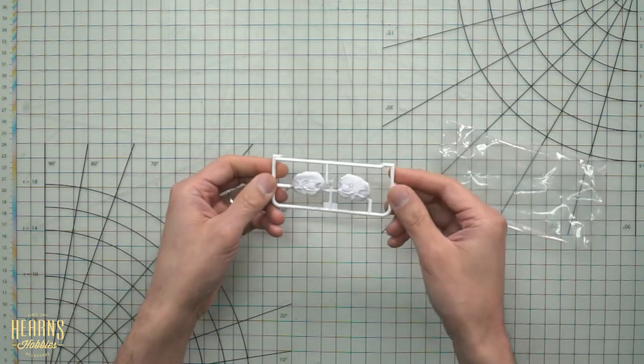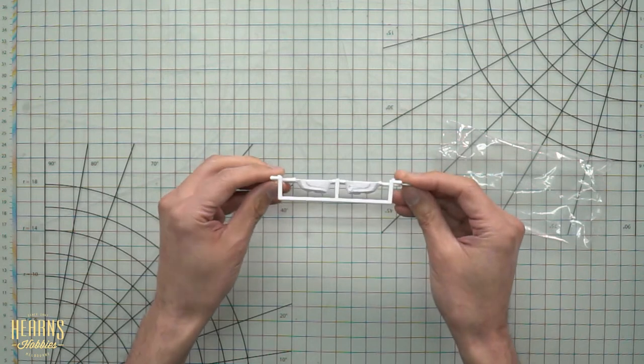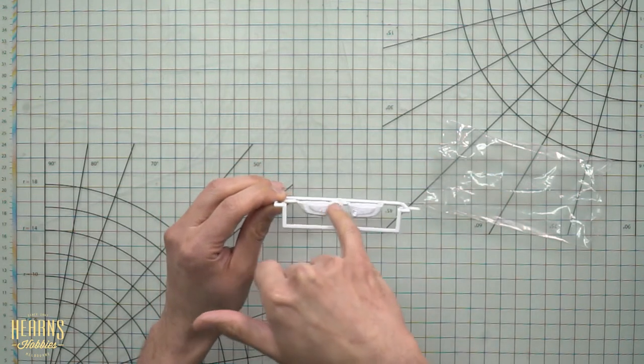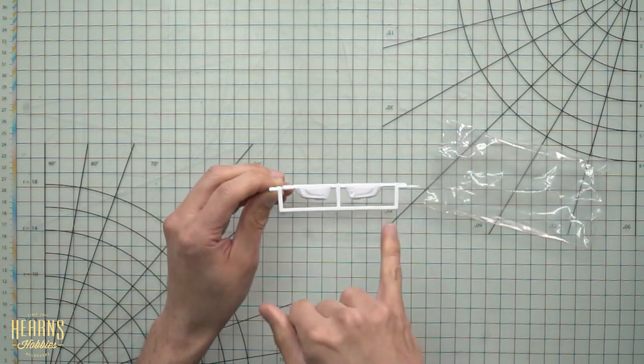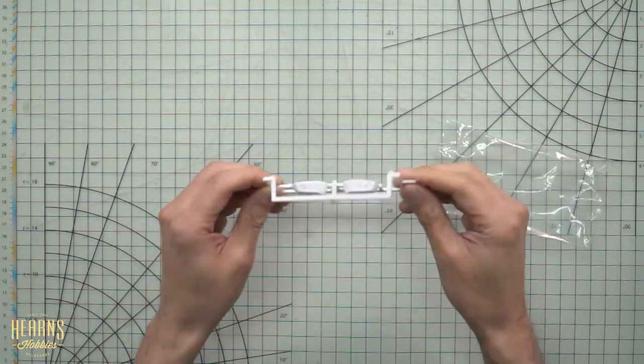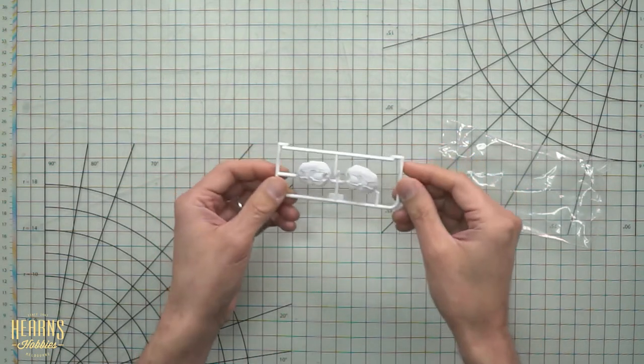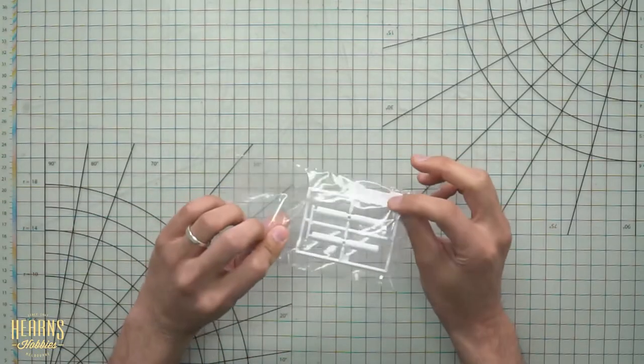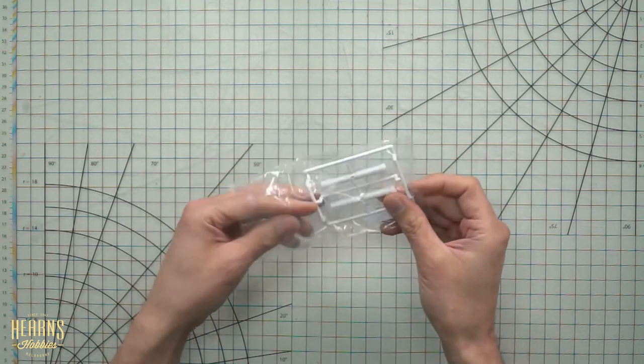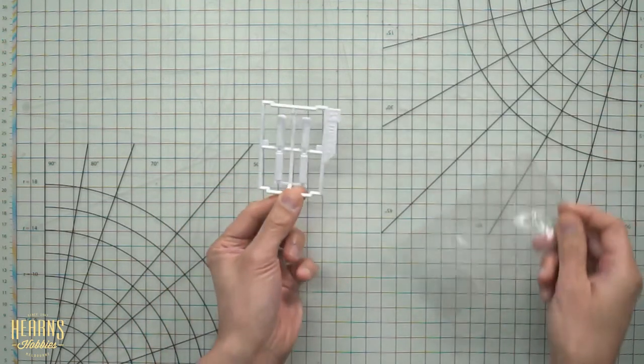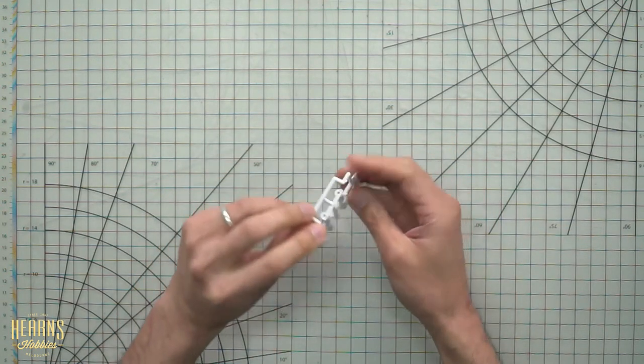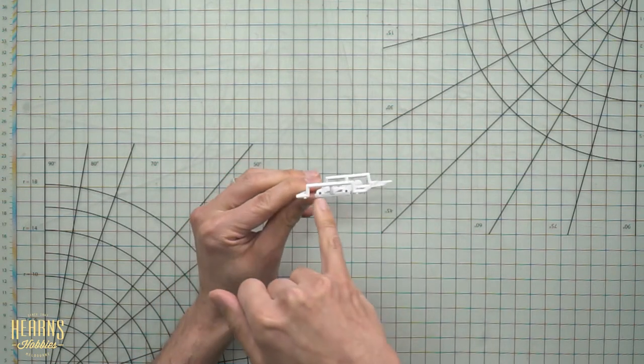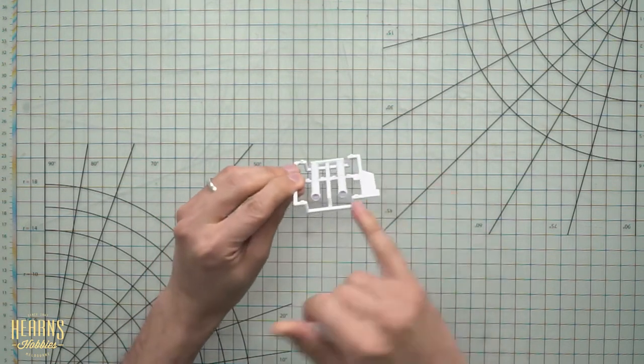Then we have some engine covers molded in white. Again slide molded so you can get these super fine cooling fins across the sides here. In the past before you had slide molds that would need to be molded in two parts to be able to get all that detail and you need to glue it together, but all in one makes it a lot easier. Over here we've got, I'm guessing these are parts of the forks. Again slide molded, you can see here all the holes already molded in.